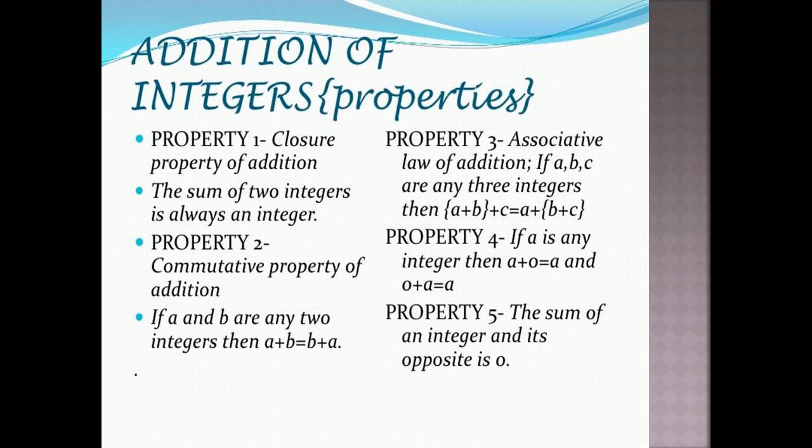Then we learnt our fourth property, which says that on adding 0 to any integer we will get the integer itself. And lastly, we learnt that on adding an integer and its opposite we will always get 0.